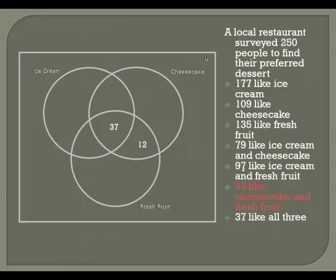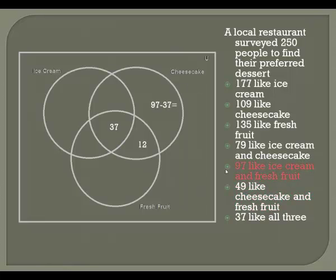The next line: 97 like ice cream and fresh fruit. They're talking about ice cream and fresh fruit but don't say anything about cheesecake, so this could include people who liked all three. So again, I need to subtract away that 37 who liked all three, so that I get the number who liked ice cream and fresh fruit but not cheesecake. So 60.